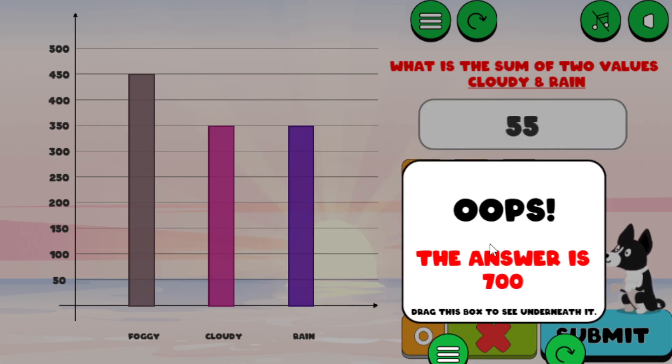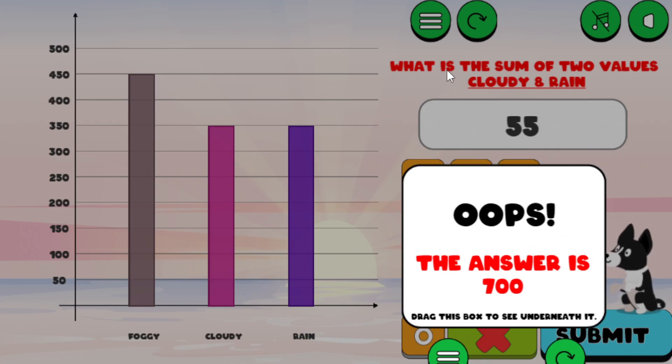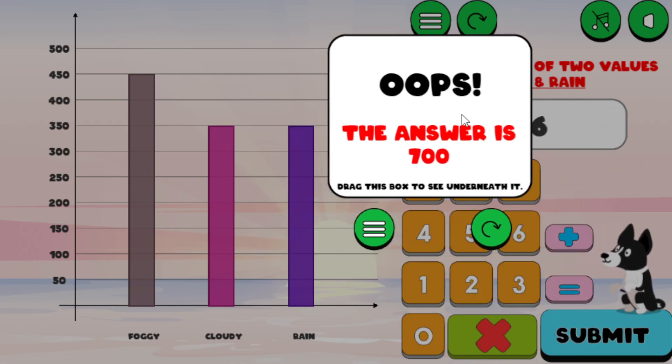It says, so I typed in 55, it says, what is the sum of the two values, cloud and rain? It says 700, so let's look at cloudy, that's 350, and rain is 350, and 350 and 350 is 700. So yep, the answer is 700, I'm putting in 55, so that's telling me the mistake I made.